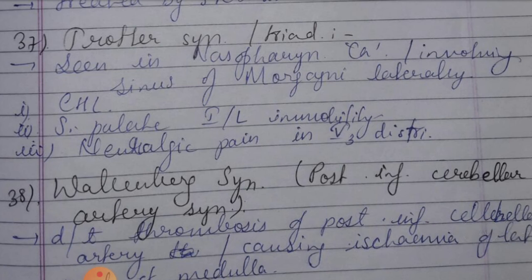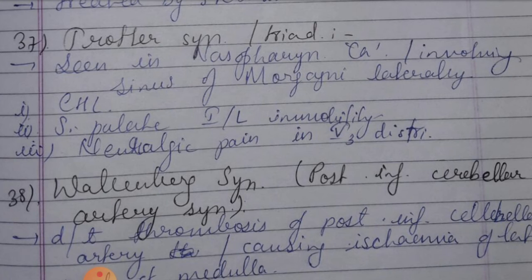Thirty-seventh is Trotter syndrome or triad — seen in nasopharyngeal carcinoma involving the sinus of Morgagni. Features: 1. Conductive hearing loss, 2. Soft palate lateral immobility, 3. Neuralgic pain from cranial nerve five (trigeminal nerve).